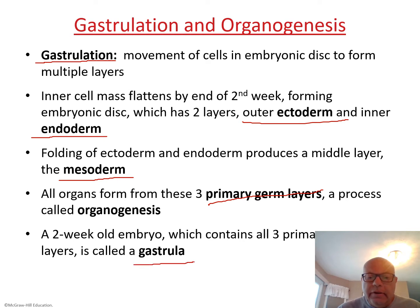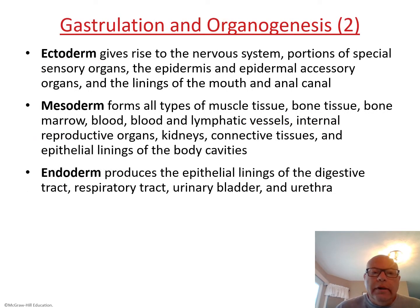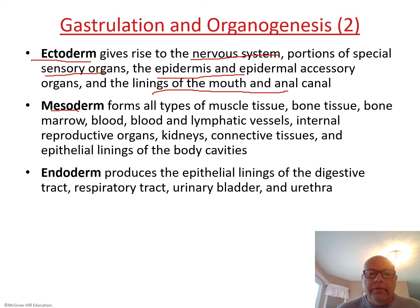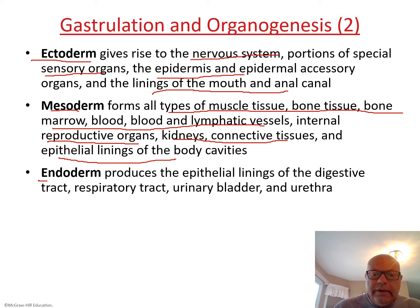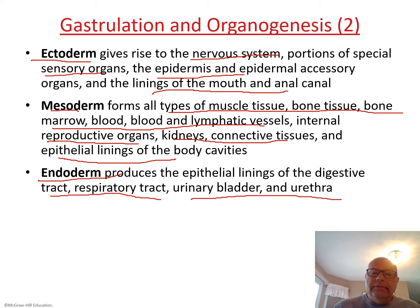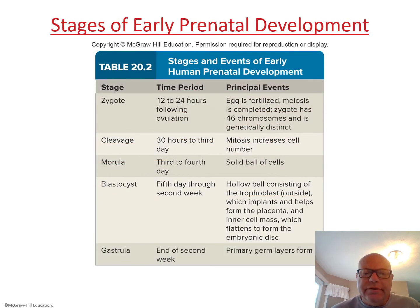When the two-week-old embryo has all three primary layers, it is called a gastrula. The ectoderm gives rise to sensory organs, the nervous system, the epidermis, and linings of the mouth and anal canal. The mesoderm gives rise to muscles, skeletal tissue, bone marrow, blood, lymphatic tissue, internal reproductive organs, kidneys, connective tissue, and epithelial lining. The endoderm produces the digestive and respiratory tracts, along with the urinary bladder and urethra.